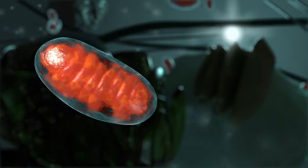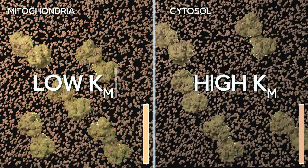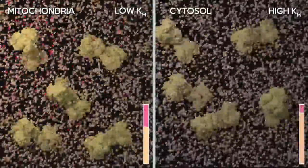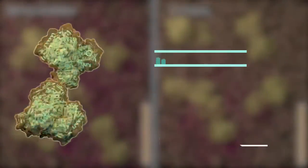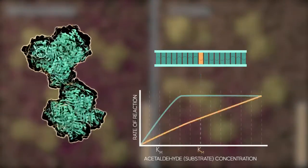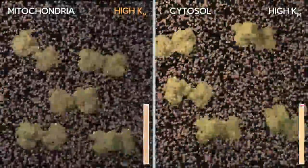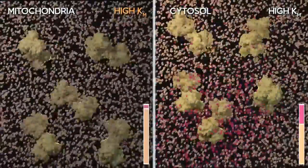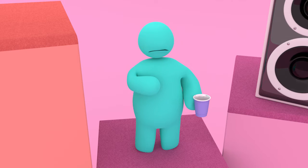We have two forms of acetaldehyde dehydrogenase: a cytosolic form with a high Km, and a mitochondrial form with a low Km. For most partiers, the mitochondrial form is responsible for quickly converting acetaldehyde into acetate. Some individuals have a single amino acid mutation in their mitochondrial form that lowers its affinity for acetaldehyde. In these cases, the cytosolic form performs the bulk of acetate production, but because of its high Km, acetaldehyde can accumulate. This accumulation causes tachycardia, flushing, headaches, and nausea.